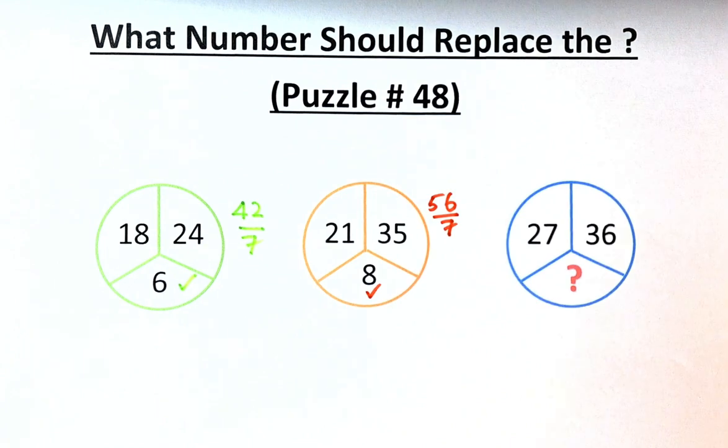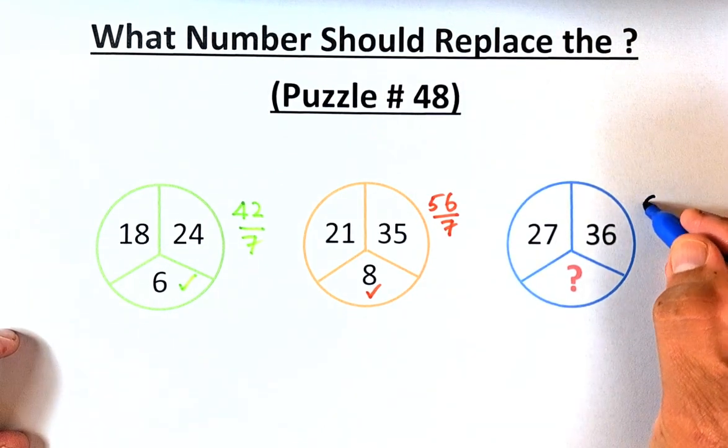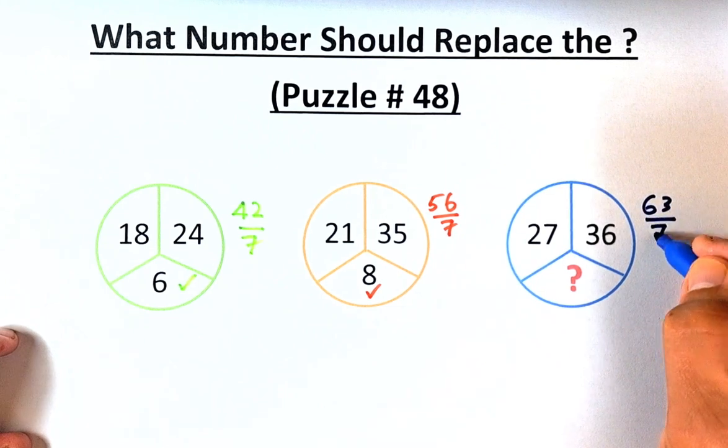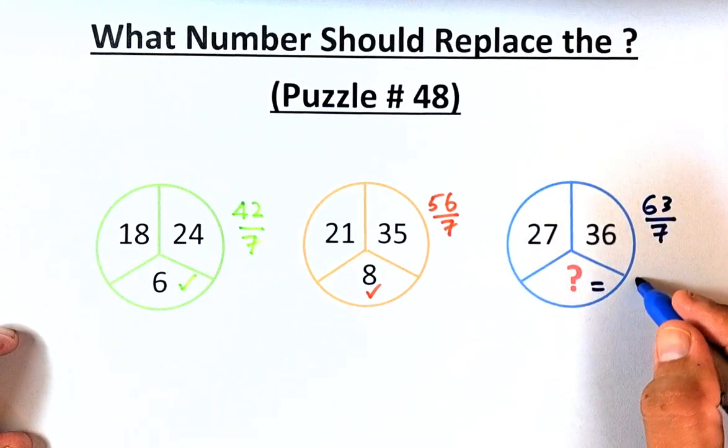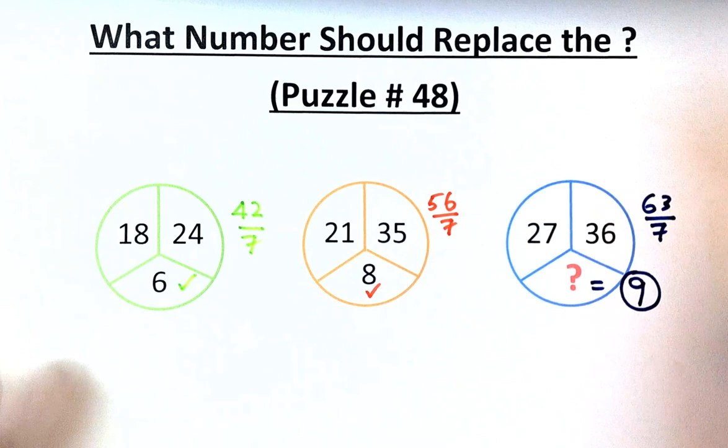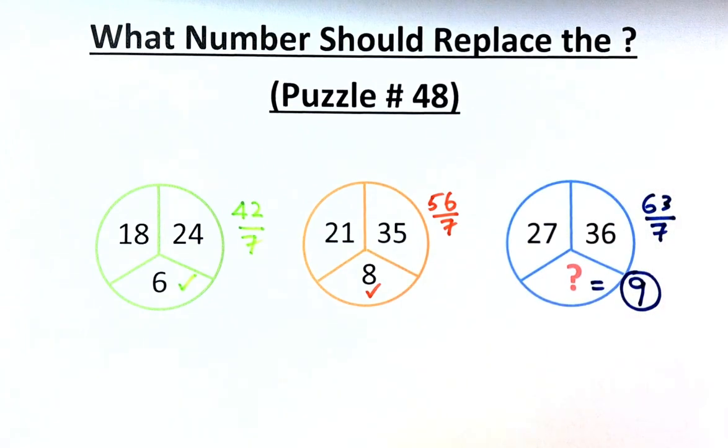So 27, 36 is the question mark. We're going to add 27 plus 36, that will be 63, and you divide by 7 and the answer is going to be equal to 9. 9 times 7 is 63. So if you got 9 in your solution, well done and I'll see you in the next one. Follow for more puzzles.